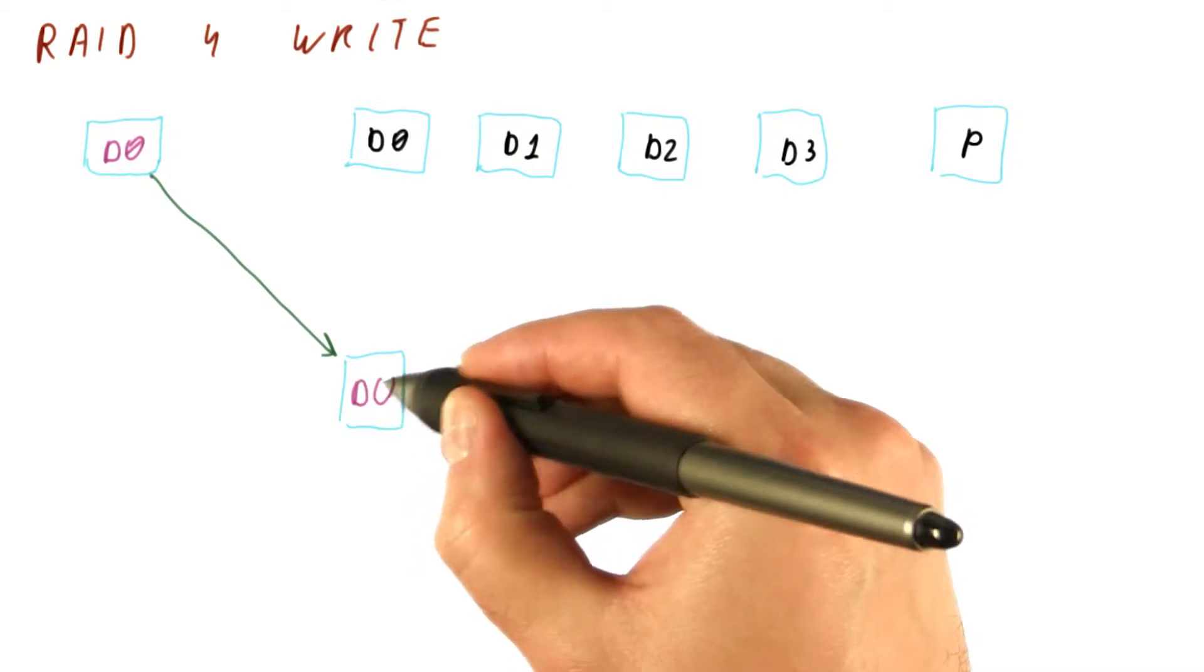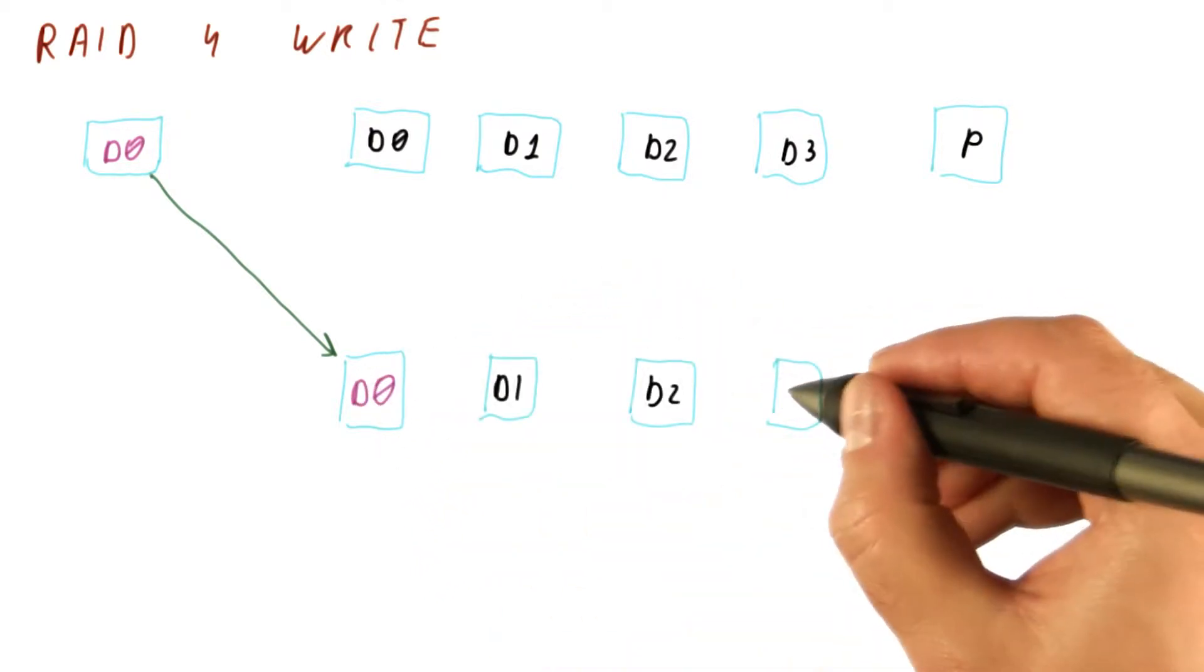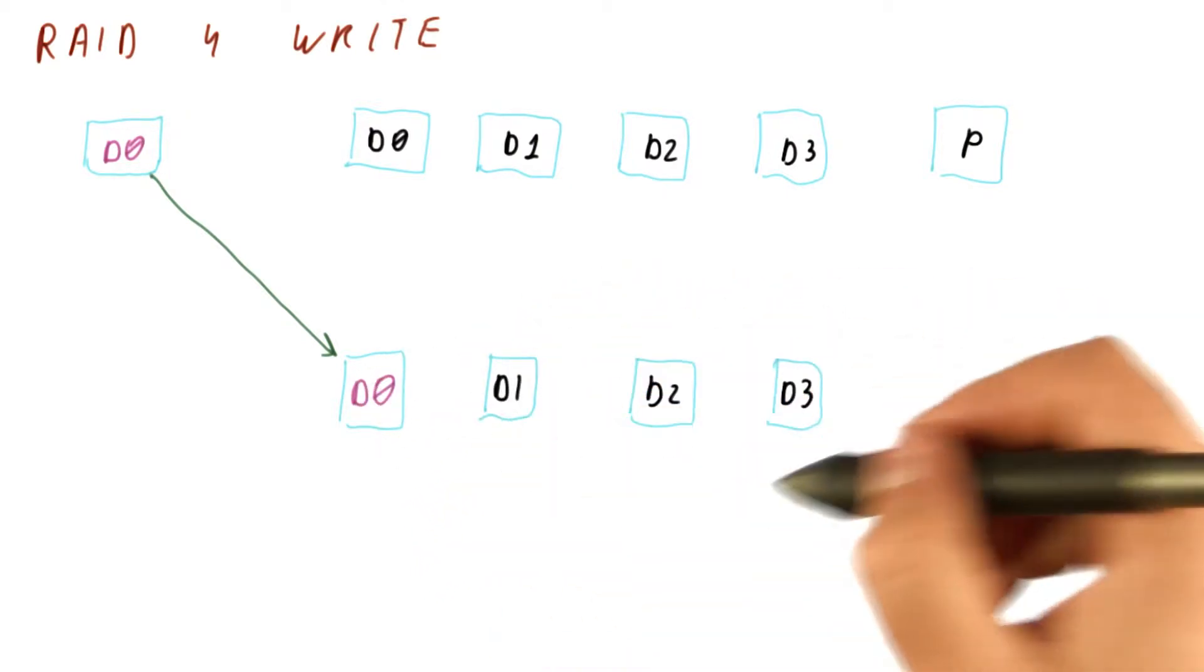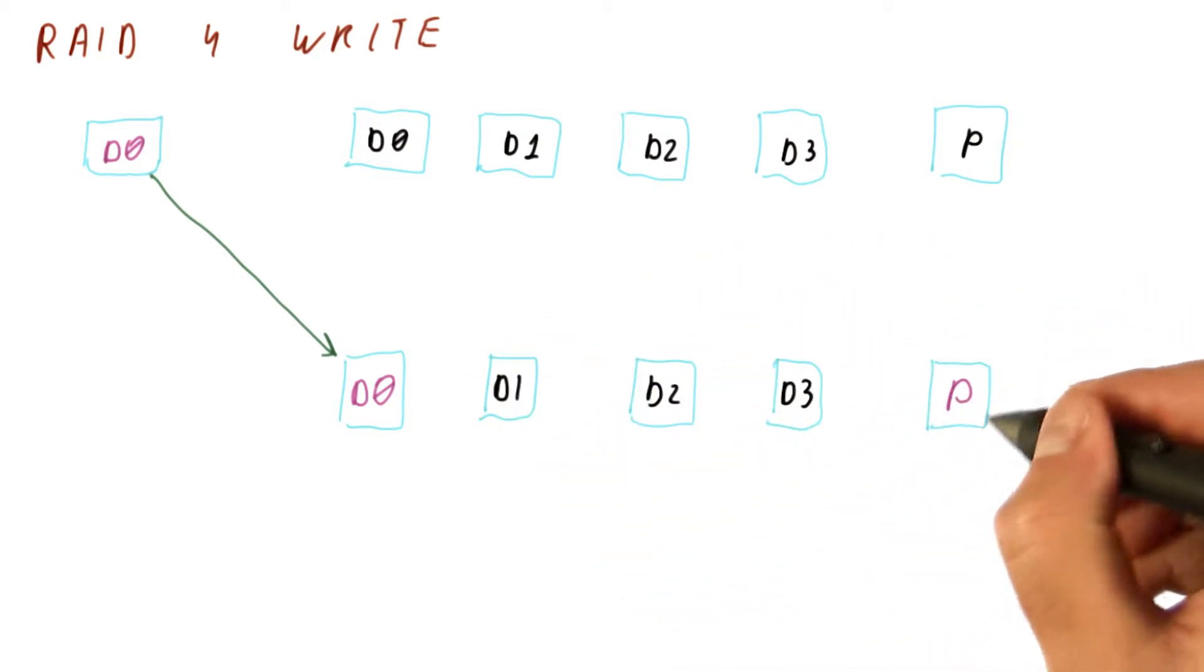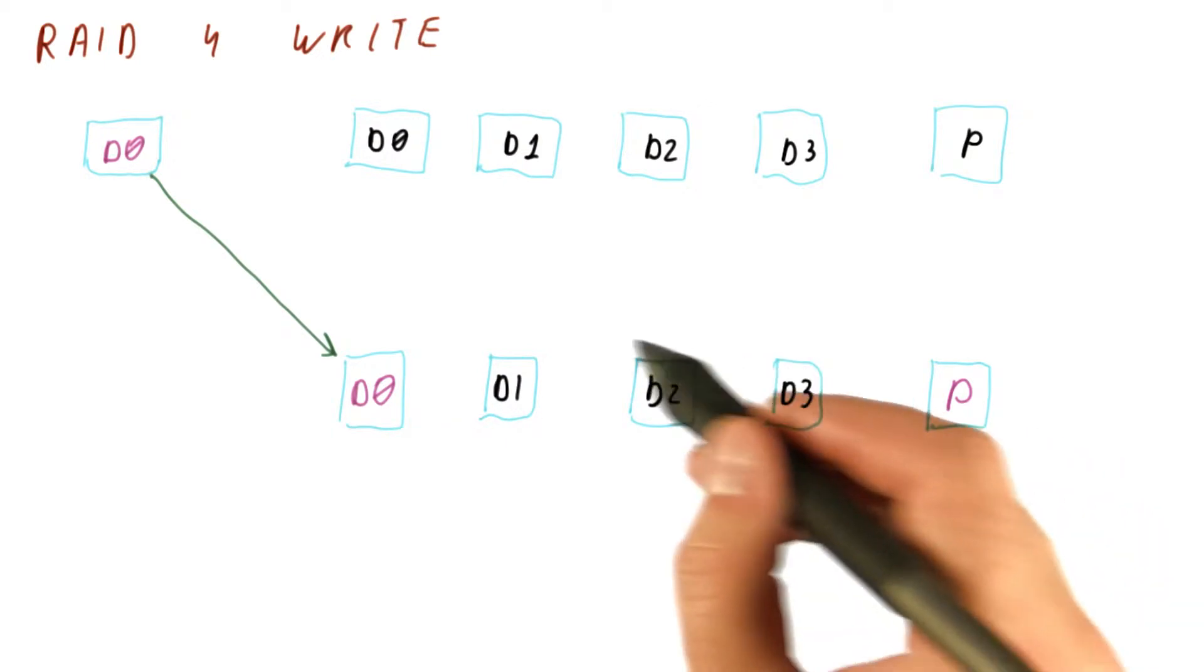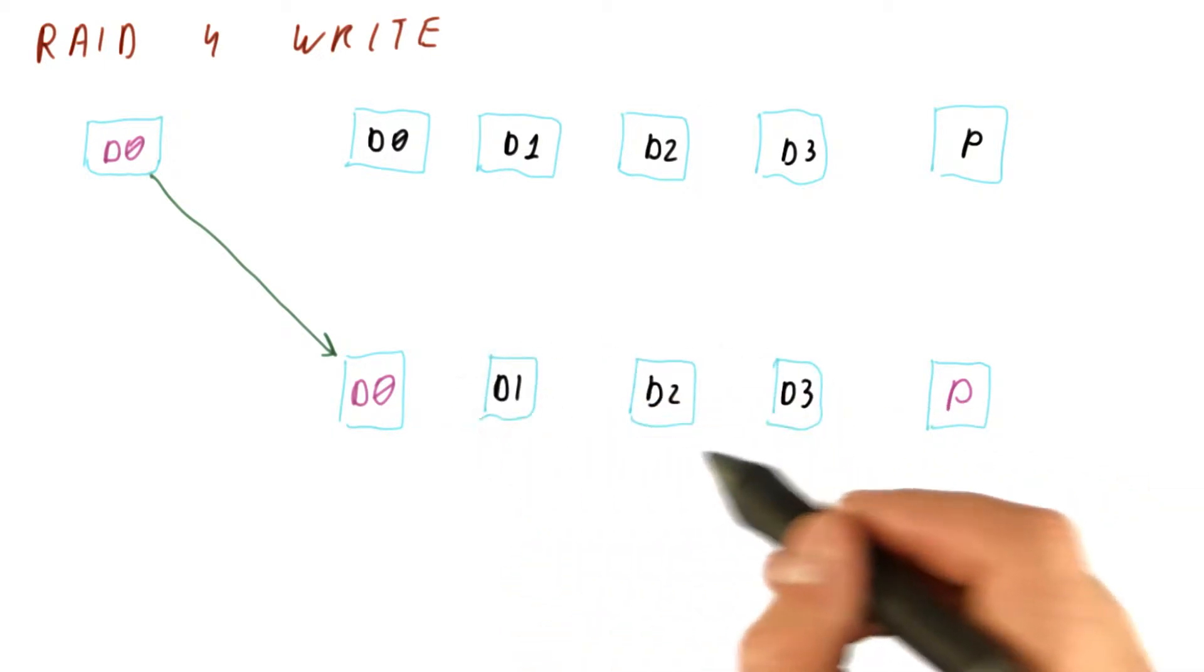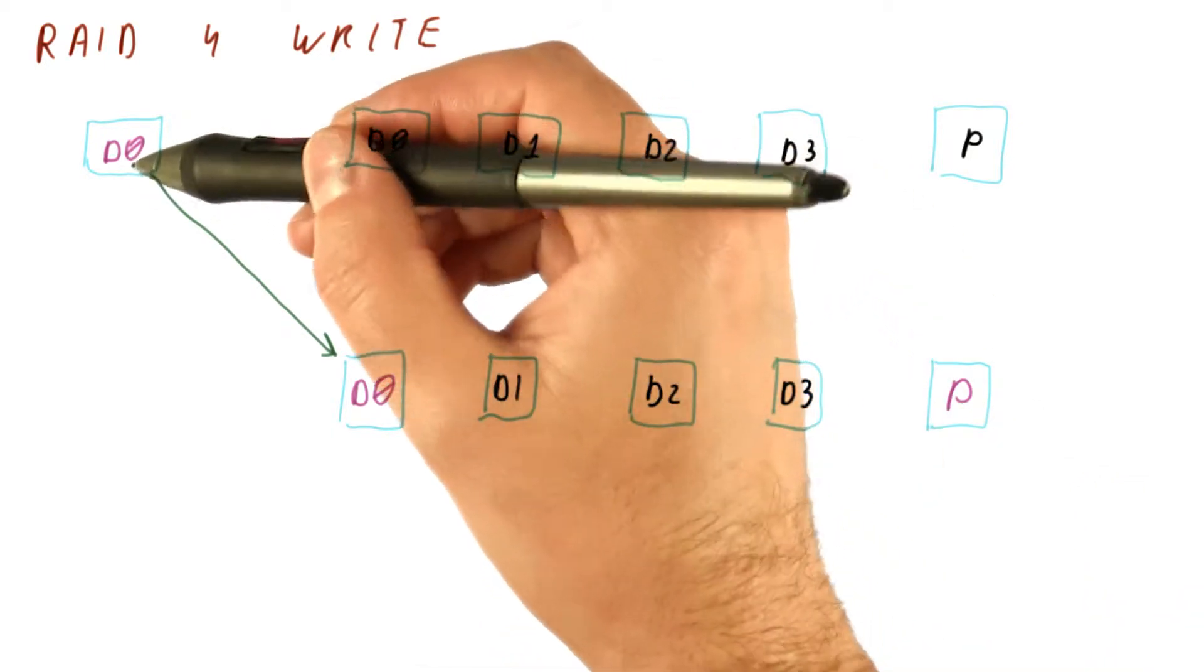So of course, here we will have changed the data, and the remaining data disks don't have any changes to their data. But the question is, how do we compute the new parity? One way of doing that would be to read the data from the other three disks.